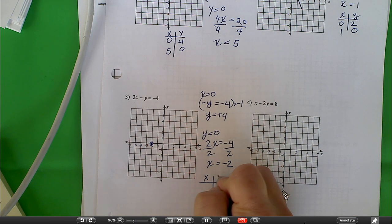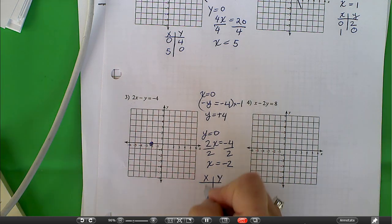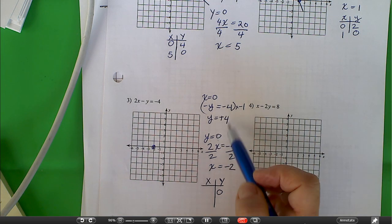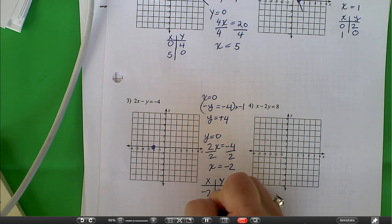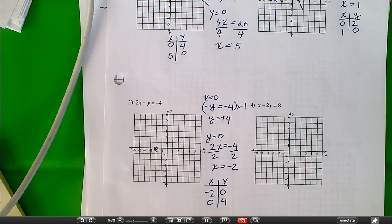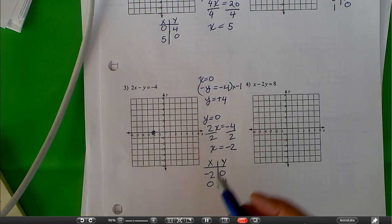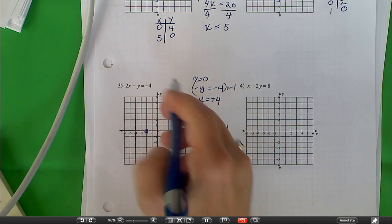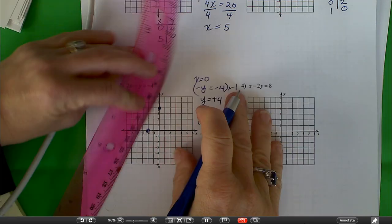Here we go. x and y. Let's create the table. When y is 0, x is negative 2. We just graphed that. When x is 0, y is positive 4. So when x is 0, y is positive 4. This is the graph we get.